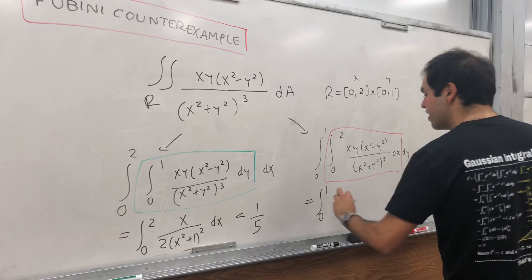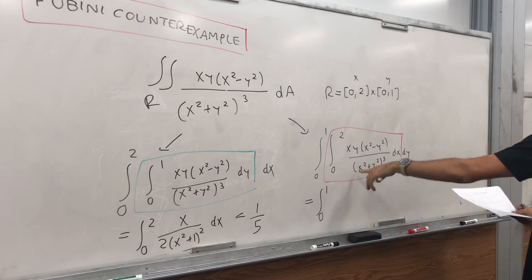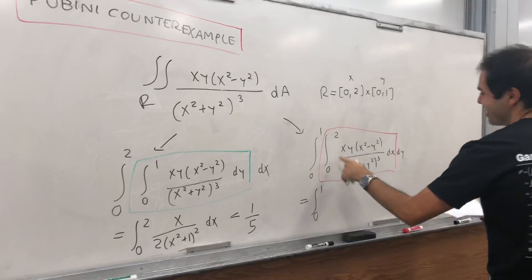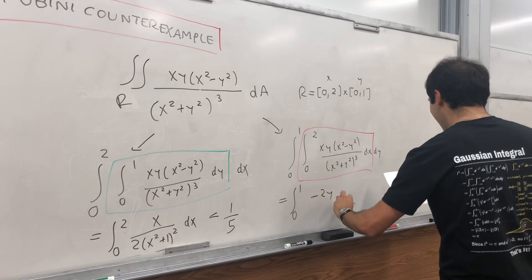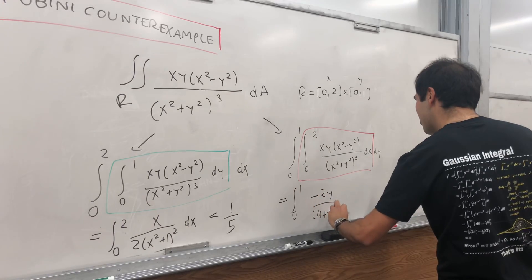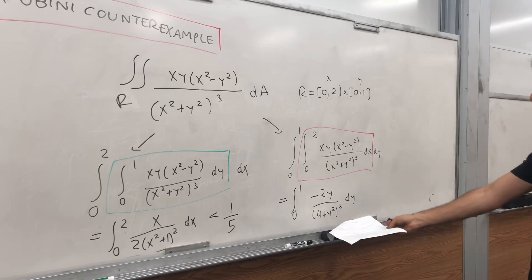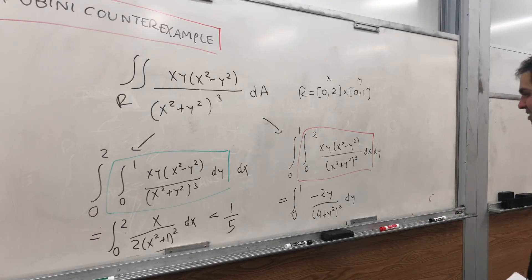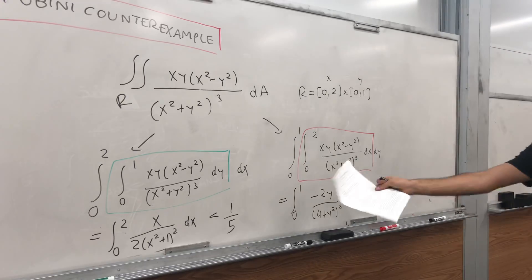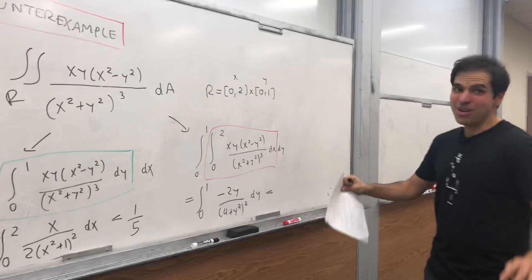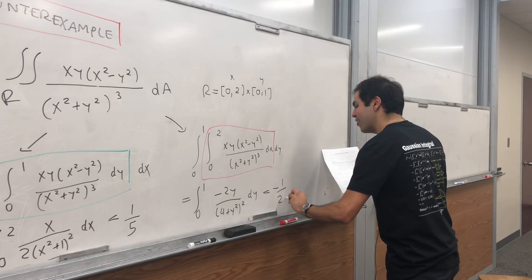And if you do that, and again, click on the link in the description if you want to see more, because you're already in the video, so it's kind of awkward here. And you get minus 2y over (4 plus y squared) squared dy. And you can use another u substitution, 4 plus y squared being u. And if you do that, you would think you get 1/5, but whoa, you actually get negative 1 over 20.